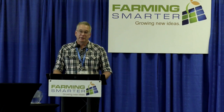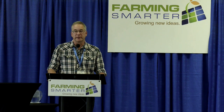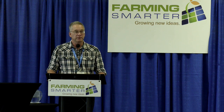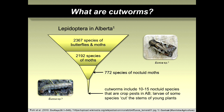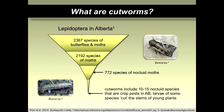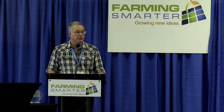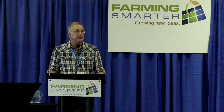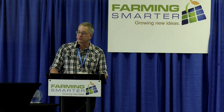I like talking about bugs — I feel fortunate to have the job that I do. I'll focus on cutworms and Lepidoptera, which include butterflies and moths. In Alberta we have about 2,400 species of those two groups combined, about 2,200 of which are moths. Within moths, there's a group called Noctuid moths with about 770 species, and within the Noctuids we find the cutworms — today's subject. We're really focused on about 15 to 20 species that form a pest complex affecting agricultural crops on the prairies.